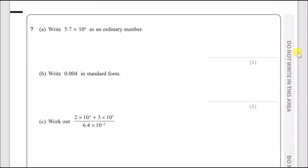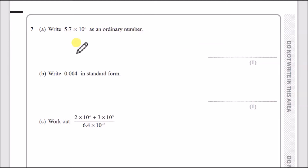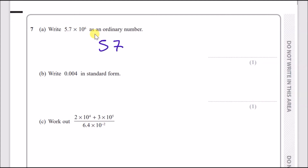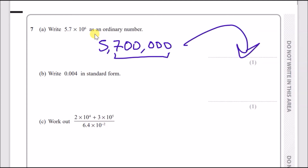Question 7a: rewrite 5.7×10⁶ as an ordinary number. You don't actually need a calculator for this. Ten to the power 6 means you must have six digits after the five. You've got five, then seven which is one digit, and then five more zeros. So the answer is five million seven hundred thousand.